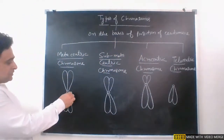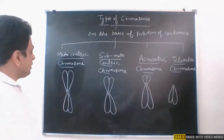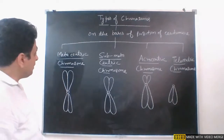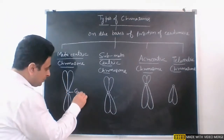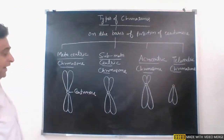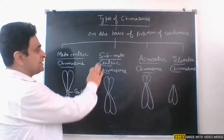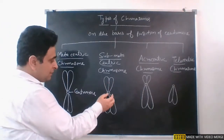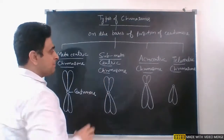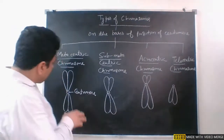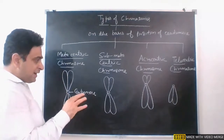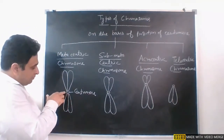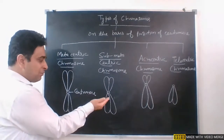If the centromere is present exactly at the center, such chromosomes are called metacentric chromosomes, and in these chromosomes both arms of the chromatid are equal. When the centromere is slightly away from the middle, such chromosomes are called sub-metacentric chromosomes. In sub-metacentric chromosomes the centromere is not exactly in the center, so the arms appear almost — but not exactly — equal.